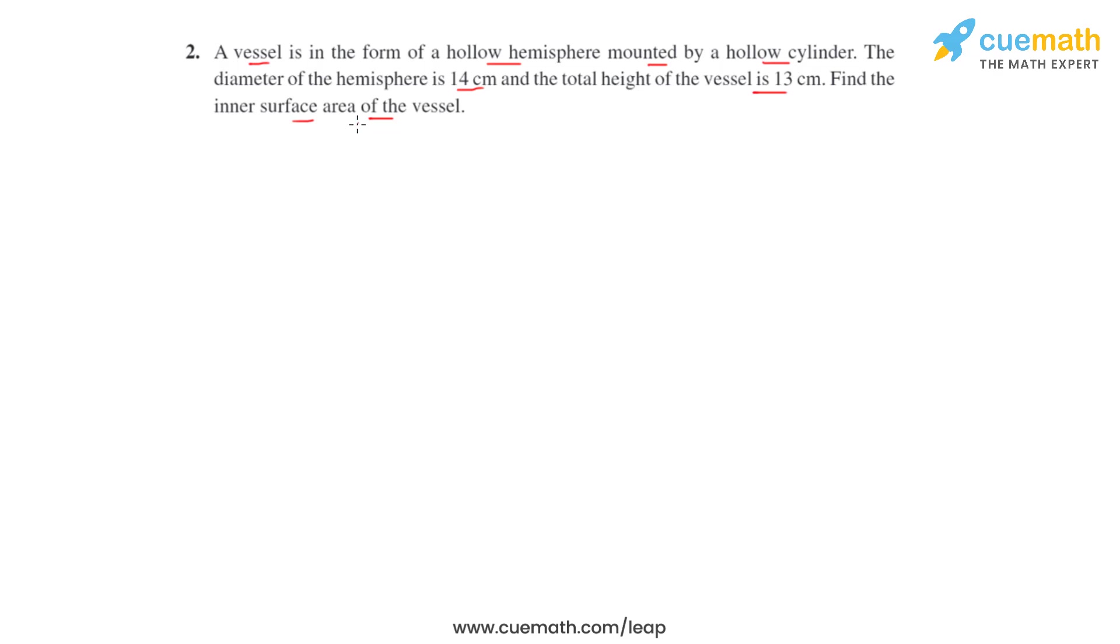So this is how the vessel will look like. Here we can see that there is a hemisphere below which is mounted by a hollow cylinder. Now let's try and get the dimensions of each of these solid shapes.